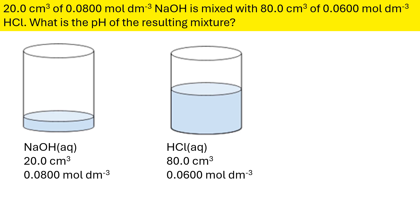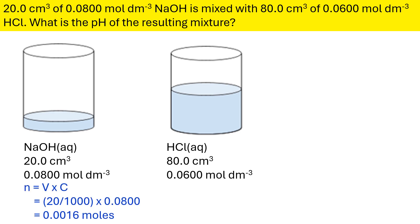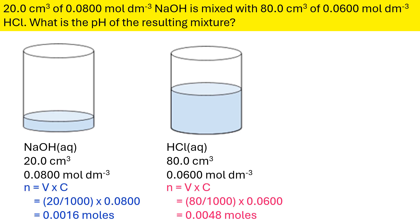The first thing to do is to work out the moles of each of the original samples before we mix them together. So doing N equals V times C gives you 0.0016 for your sodium hydroxide and 0.0048 for your HCl.